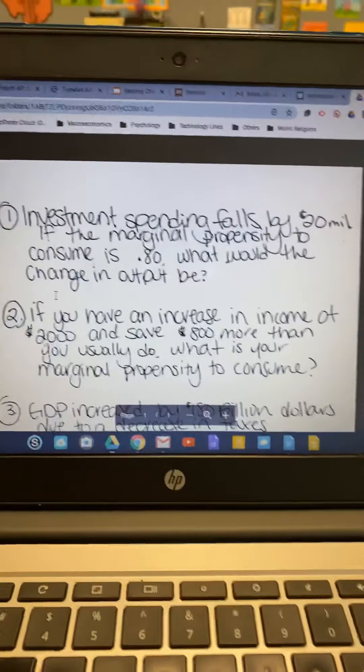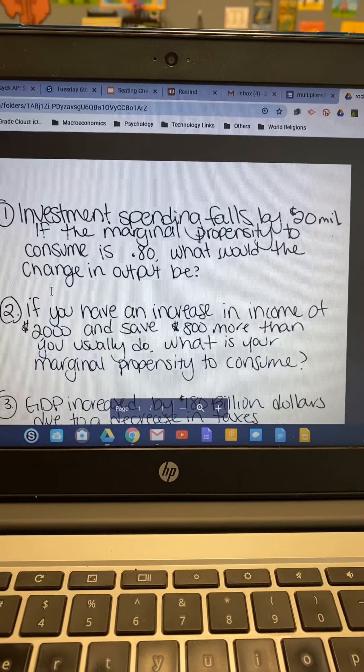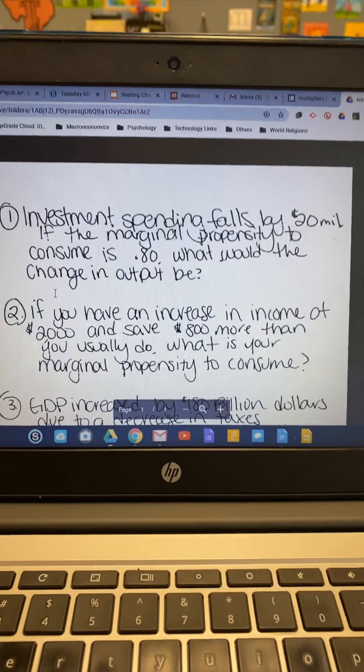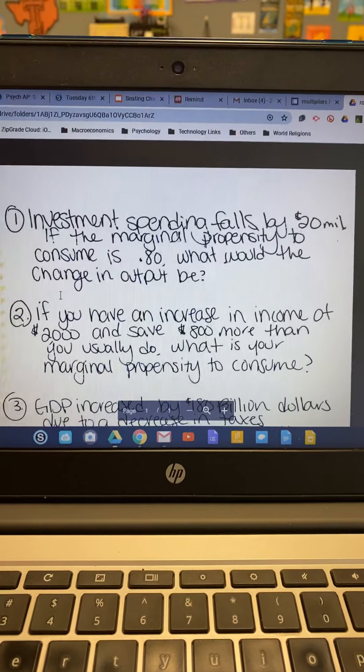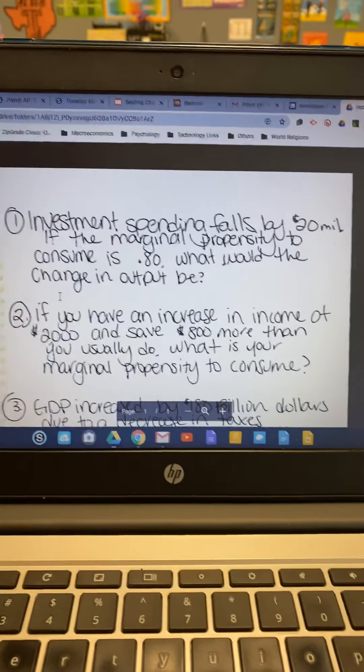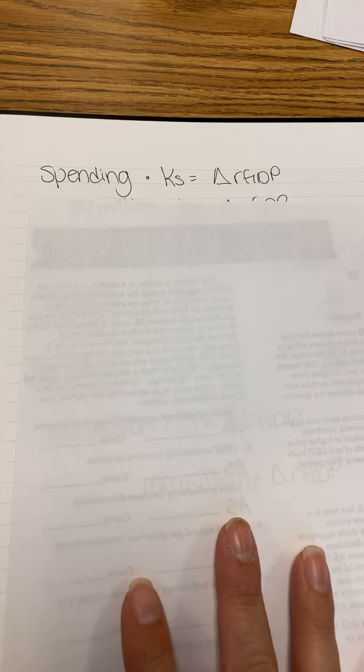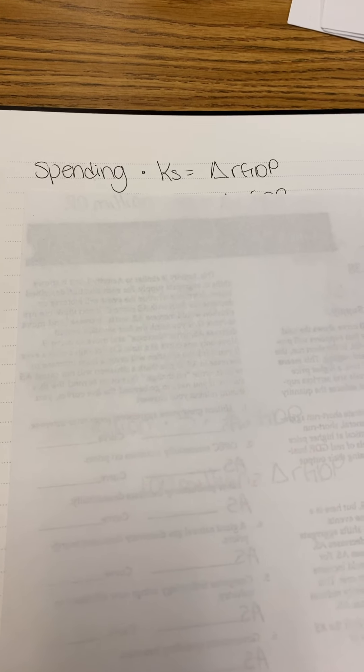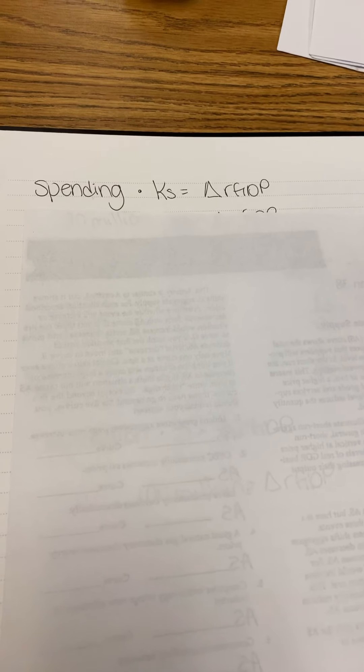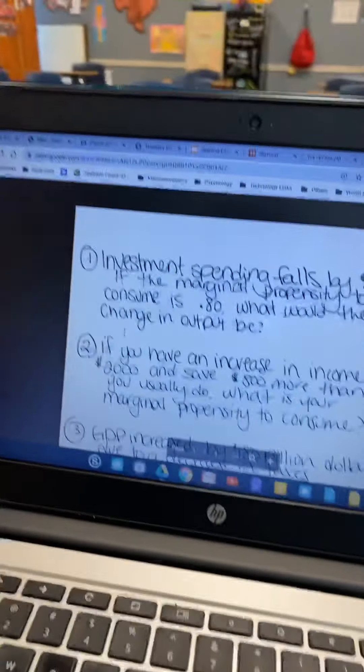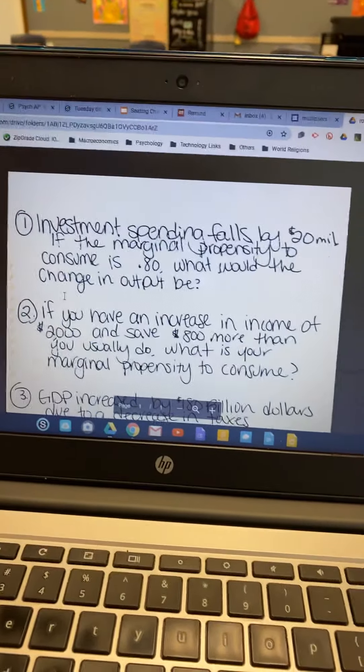The first question says investment spending falls by $20 million. If the MPC is 0.8, what would the change in output be? I know there's some sort of change in spending and it's asking about output. Change of spending times KS equals some sort of change in GDP. Because there's been a change in spending, it's giving me MPC and asking for output. So it's got to be one of these multiplier problems with the spending.